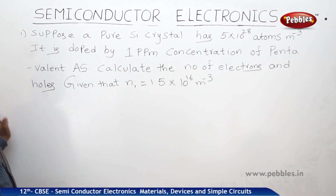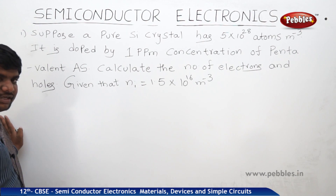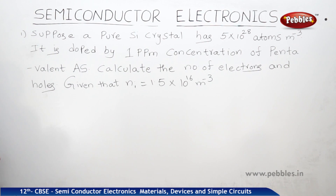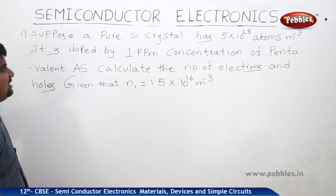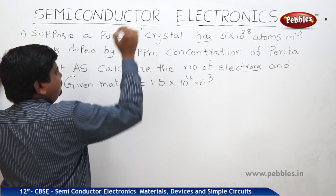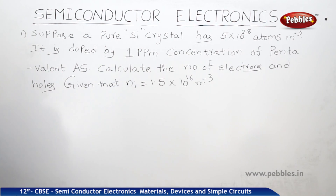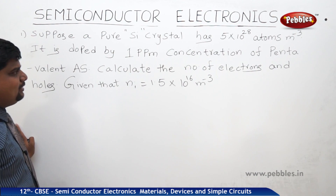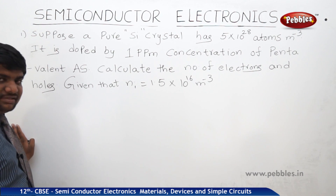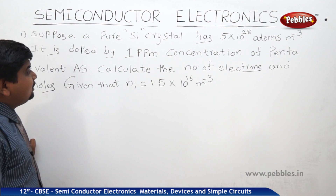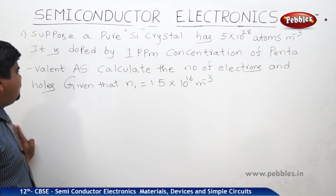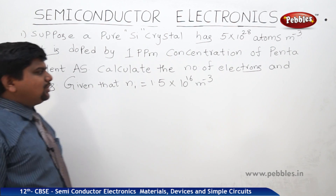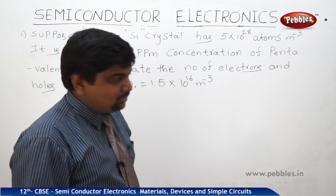This problem relates to the number of electrons and number of holes with the help of carrier concentration. Suppose a pure silicon crystal has 5×10²⁸ atoms per meter cube. It is doped by 1 ppm concentration of pentavalent arsenic. Calculate the number of electrons and holes, given that Ni is equal to 1.5×10¹⁶ per meter cube.